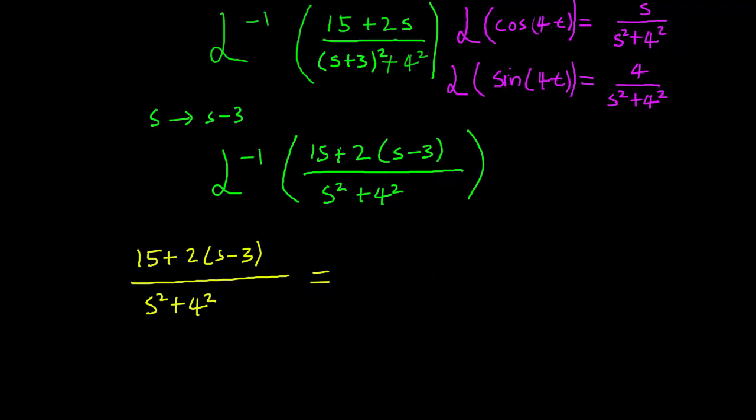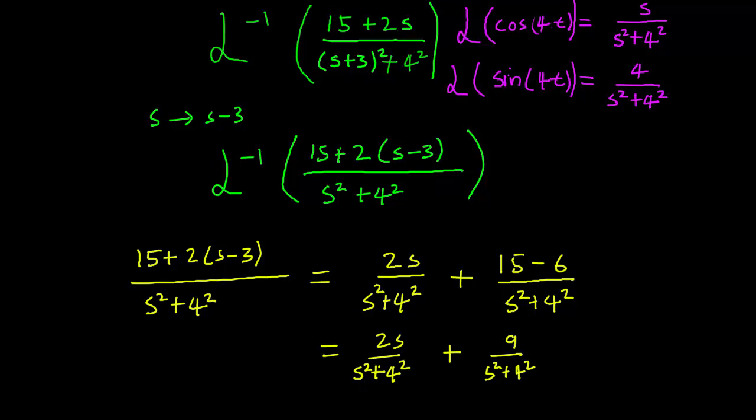The first thing we have to do is to rearrange terms a little bit. So we have the s term here, so this is going to be 2s over s squared plus 4 squared plus 15 minus 6, that's minus 3 times 2, over s squared plus 4 squared. So what we have instead is 2s over s squared plus 9 over s squared plus 4 squared.